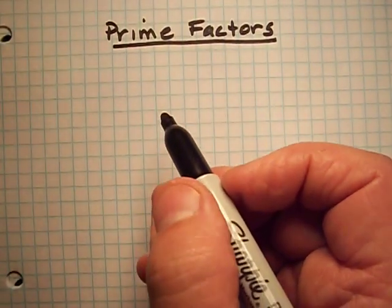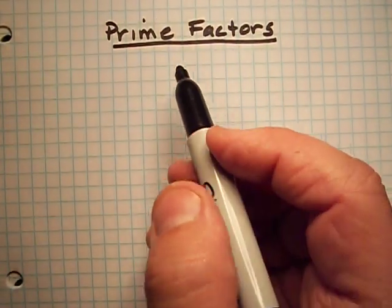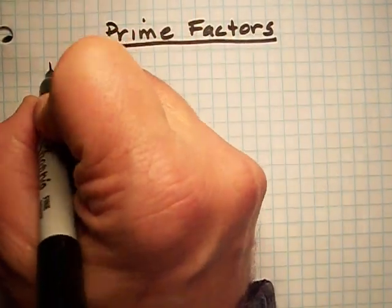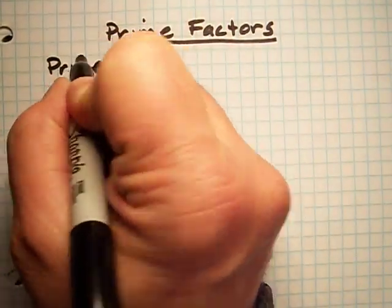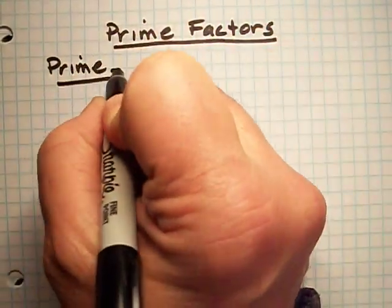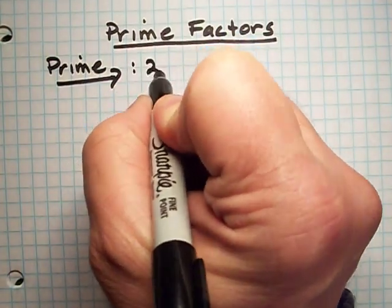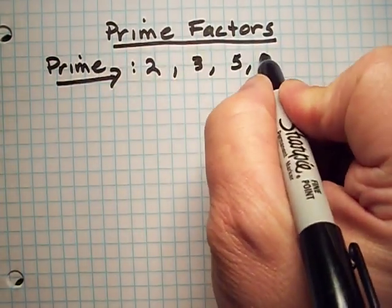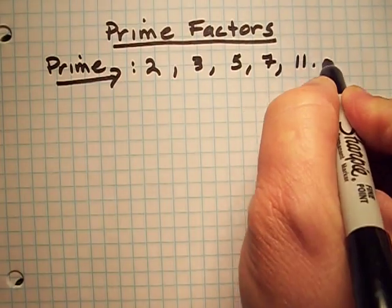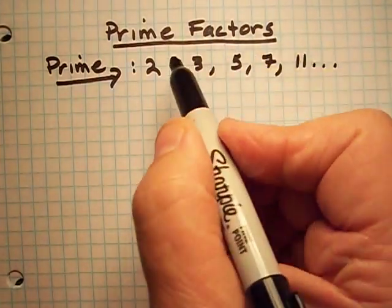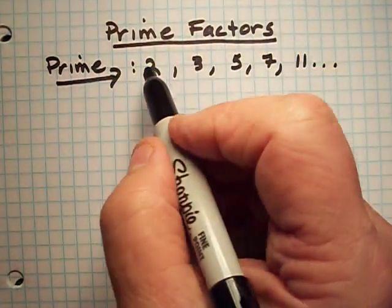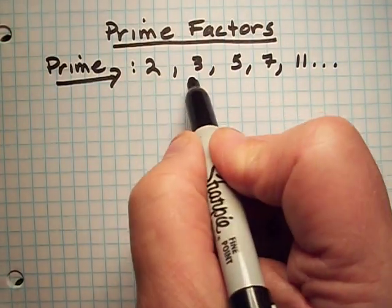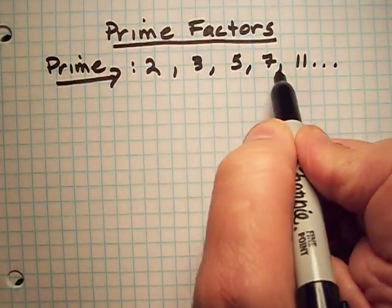Today I wanted to talk about prime factors or prime factorization. First of all, what is a prime number? A prime number is a number like 2, 3, 5, 7, 11, and so on. A prime number is a number that only 1 and itself can divide evenly into.